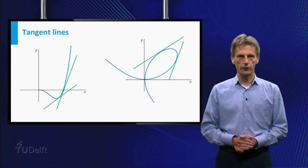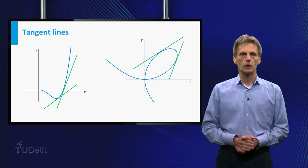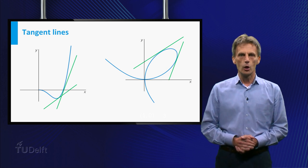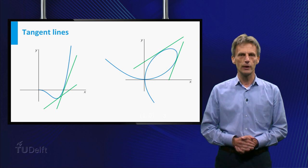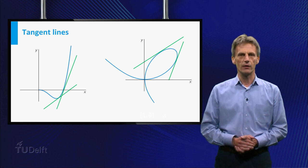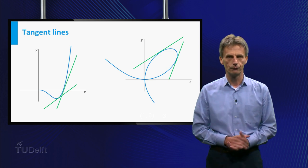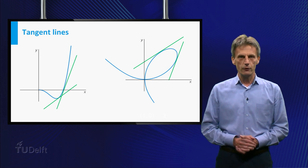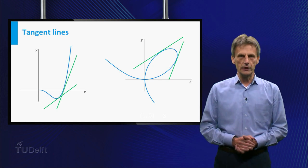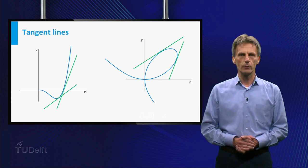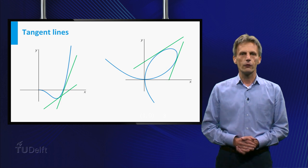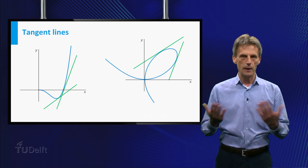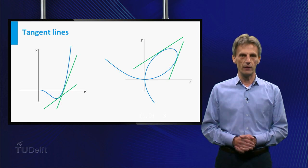Both curves have tangent lines. The slope of a tangent line to the curve on the left can be calculated by explicit differentiation. For the curve on the right we need another technique, and this will be the topic of the next lecture. It is called the technique of implicit differentiation.